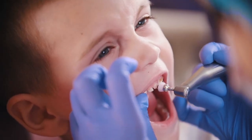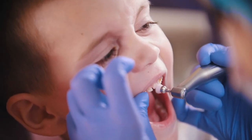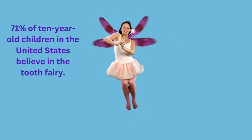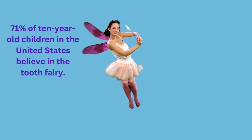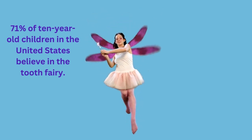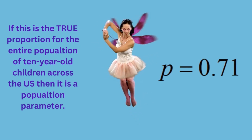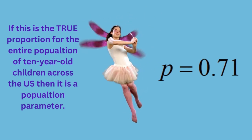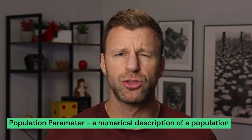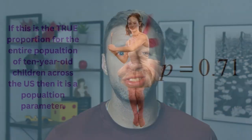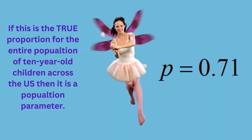Maybe one day at the dentist's office you heard that 71% of 10-year-olds across the United States believe in the tooth fairy — you know, got that wiggly tooth, put it underneath your pillow, and the tooth fairy brings you money the next day. Now if this is the true proportion of all 10-year-olds across the entire United States, we would call this a population parameter — a true numerical description for the entire population. We'd use the symbol p to represent that 71%.